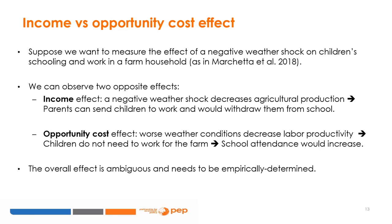Coming back to our example, worse weather conditions determine a decrease in labor productivity and in the opportunity cost of school. Parents could then be induced to send their children to school because their work productivity on the family farm is low. This effect is called the opportunity cost effect, or price effect, or indirect effect, of the weather shock. In our example, the opportunity cost effect is positive for schooling and negative for child work. The two effects are thus opposite in sign, meaning the overall effect is ambiguous and needs to be empirically determined.